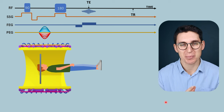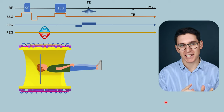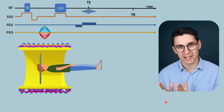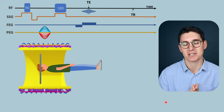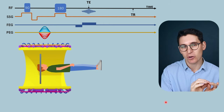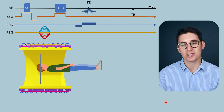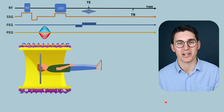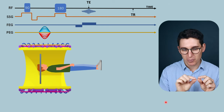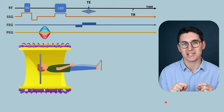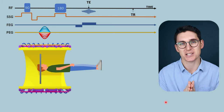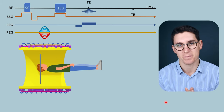Hello everybody and welcome back. Up until now we've looked at how we generate signal, how we localize signal within a specific slice, and how we store that data to ultimately generate an MRI image. In this talk we're going to be looking at a couple more of the nitty gritties — some of the details in our pulse sequence that we haven't touched on so far.